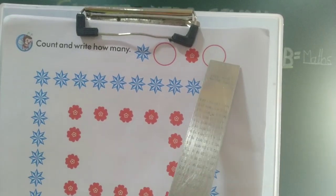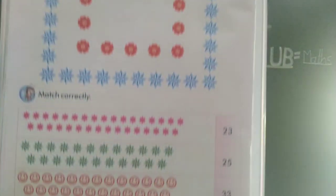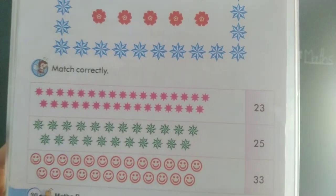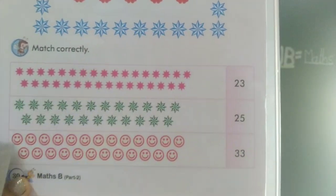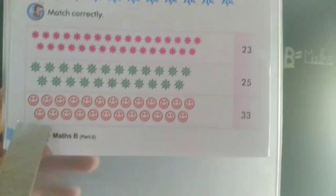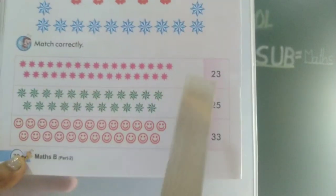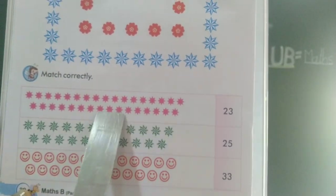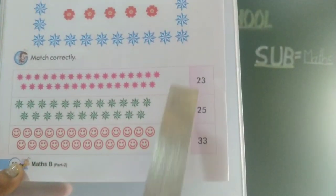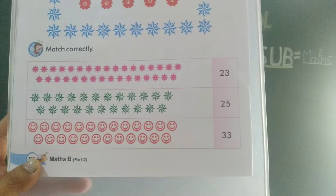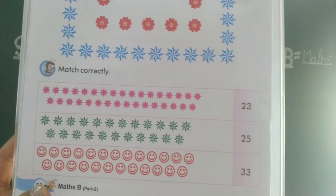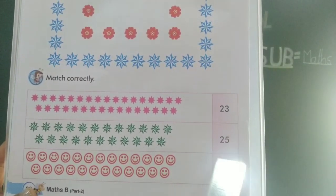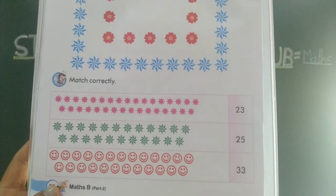So right here, match correctly — ith stars, flower, smiley balls, ith ka hi numbers. So right here, ith stars count karoun tumha la, ya number madhe match — kontya number la match ho tati kai kare cha hai? Match kare cha hai, okay — pencil day sa match kare cha hai.